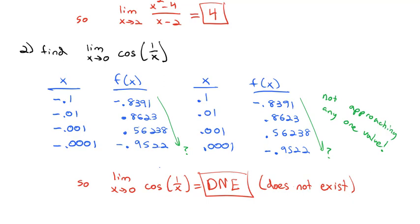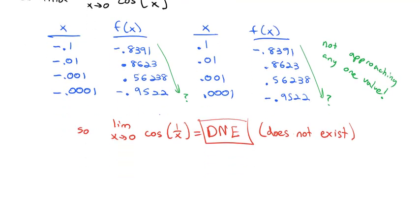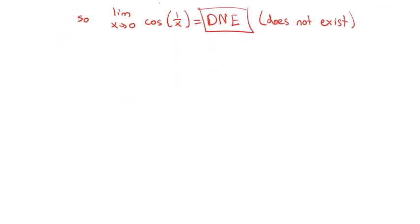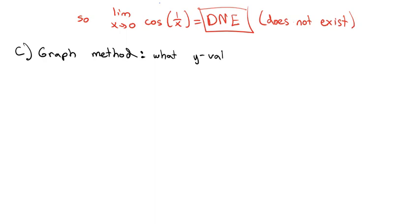So our first strategy for finding a limit is the table method: we take values closer and closer to the target number and see what the function approaches on both the left and right side. The second method is the graph method, where we look at the graph and see what y-value the graph is approaching.